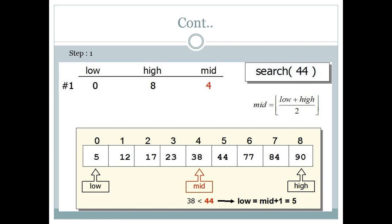For binary search, we assign the first element as low and the last element as high. So low is at index 0 and high is at index 8. We find the mid value as low plus high divided by 2. Here, low is 0 and high is 8, so 0 plus 8 divided by 2 gives us a mid value of 4.